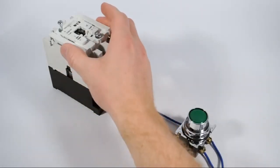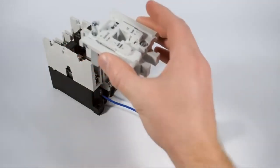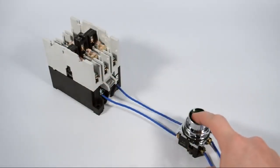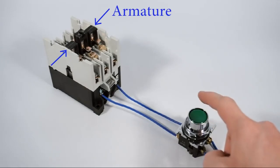Next, I'll remove the top off of the contactor so you can see the electrical contacts inside. Watch the armature and contacts move as I energize and de-energize the coil.